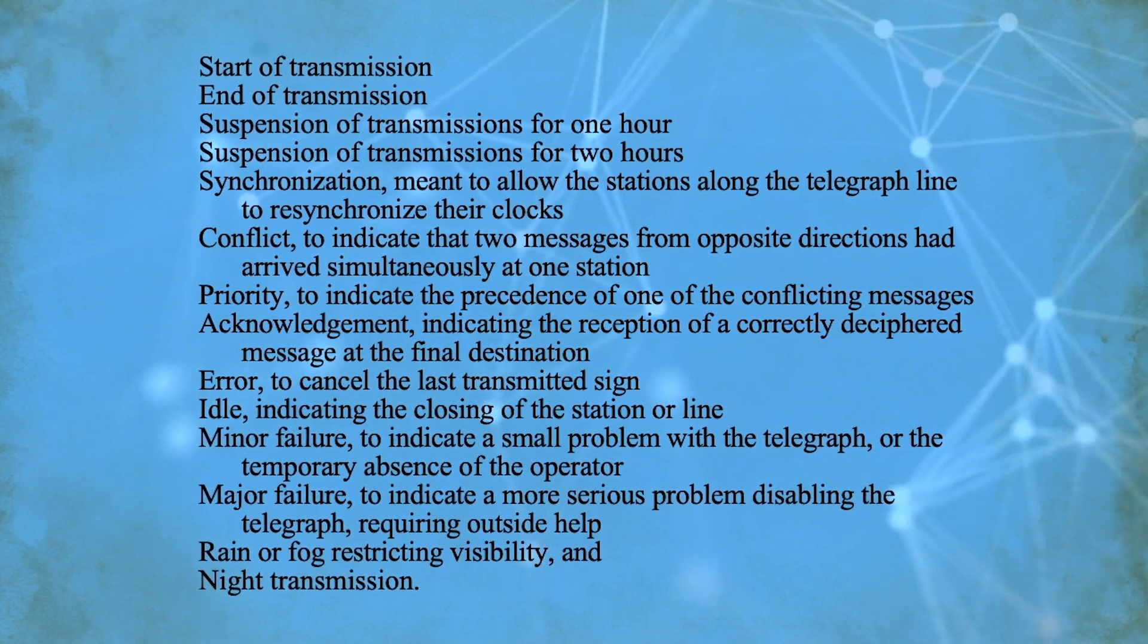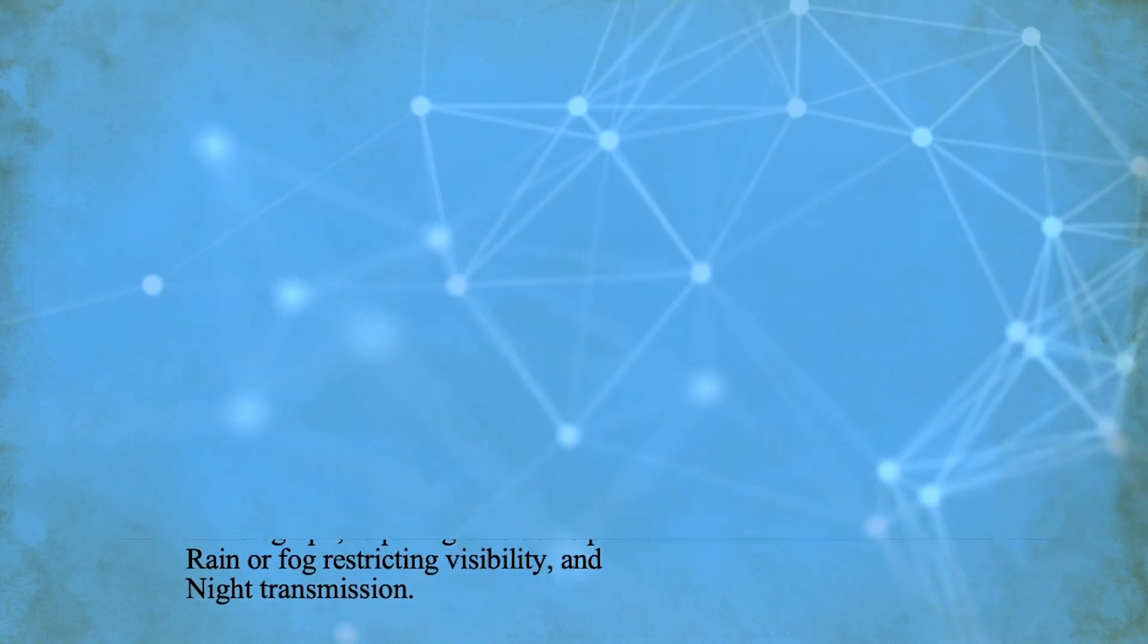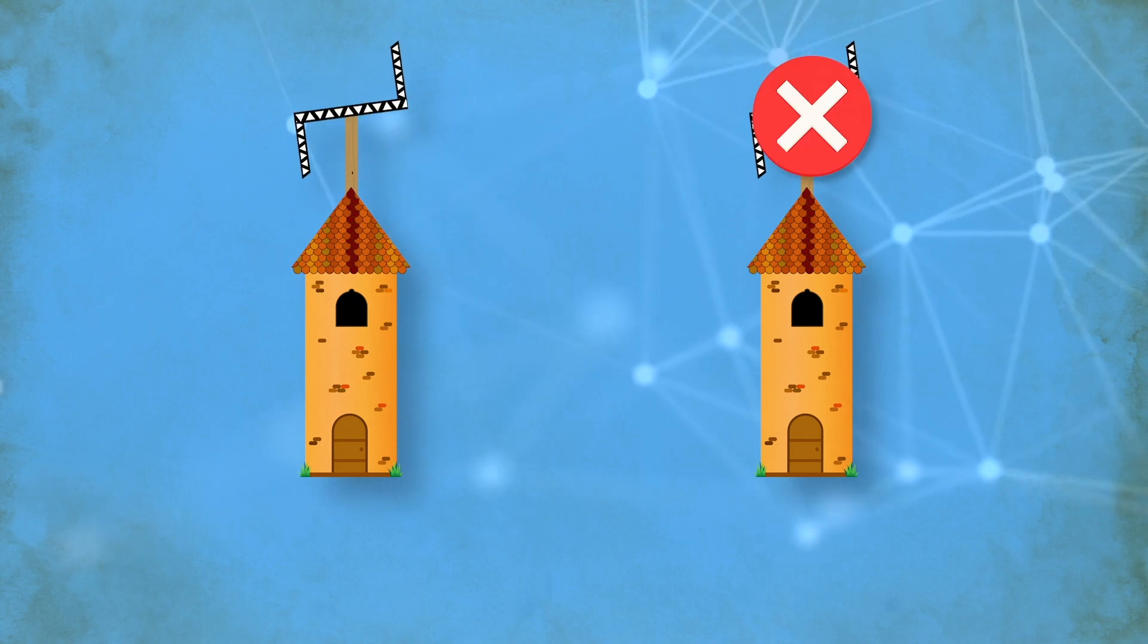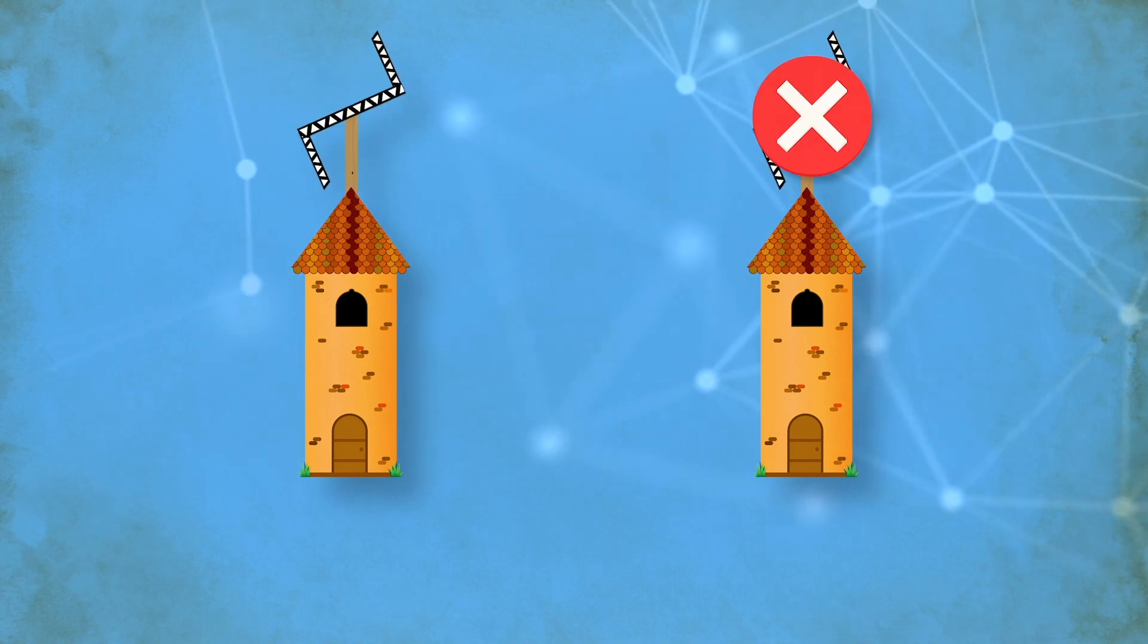He built in error-correcting instructions into the code. If an operator made a typo, he could use these error codes to instruct the operator at the next station to disregard or delete the previous signal. But this was also what opened the door to the world's first cyber attack.